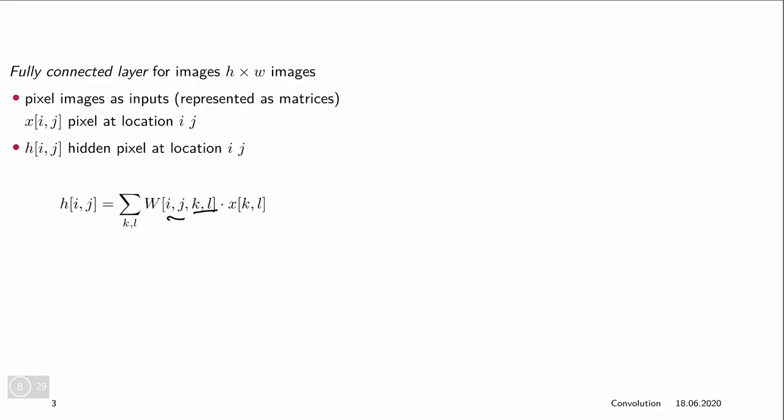This has a weight for each input pixel and output pixel in the hidden layer, which means that it has h squared times w squared number of values if h has the same size as x.